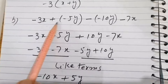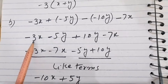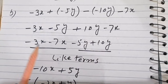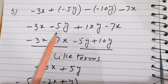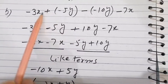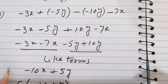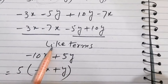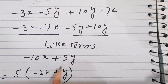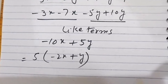Part b: -3x + (-5y) - (-10y - 7x). We gather like terms and resolve signs: plus minus minus becomes plus, and minus minus becomes plus. So we get -3x + 7x for the x terms, and -5 + 10 = 5 for the y terms. Taking 5 common, the answer is -2x + y.